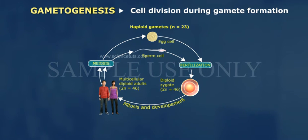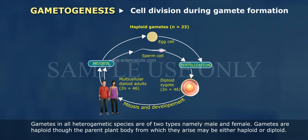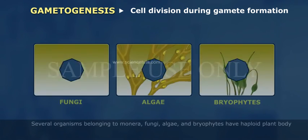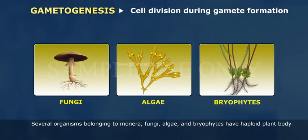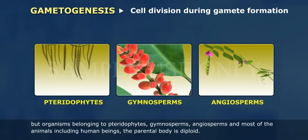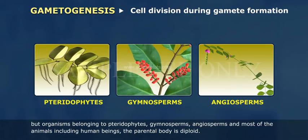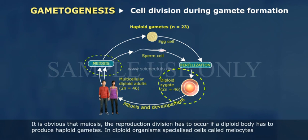Cell division during gamete formation. Gametes in all heterogametic species are of two types, namely male and female. Gametes are haploid, though the parent plant body from which they arise may be either haploid or diploid. A haploid parent produces gametes by mitotic division. Several organisms belonging to monera, fungi, algae and bryophytes have haploid plant body, but organisms belonging to pteridophytes, gymnosperms and angiosperms, and most of the animals including human beings, have a diploid parental body. It is obvious that meiosis, the reductive division, has to occur if a diploid body has to produce haploid gametes.